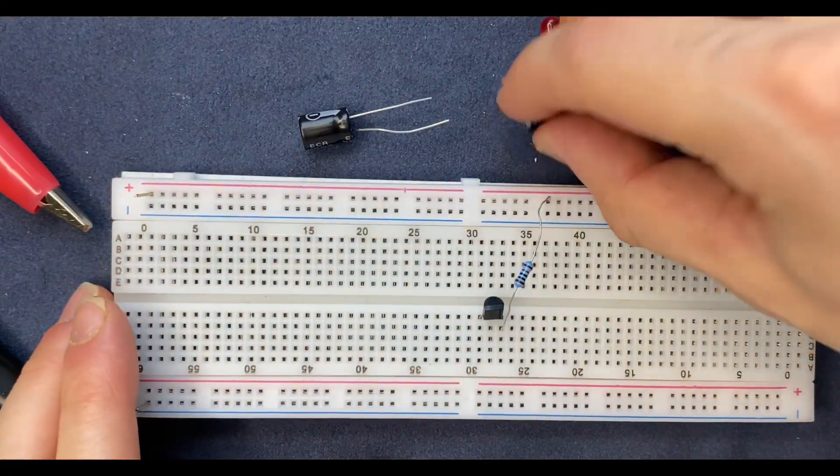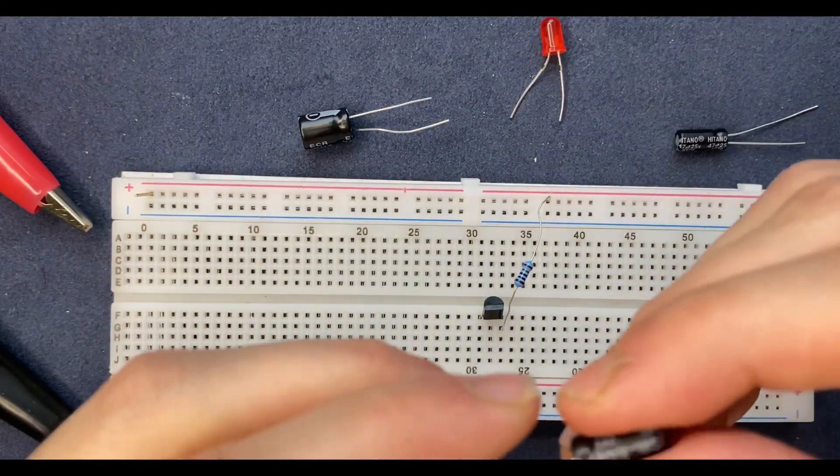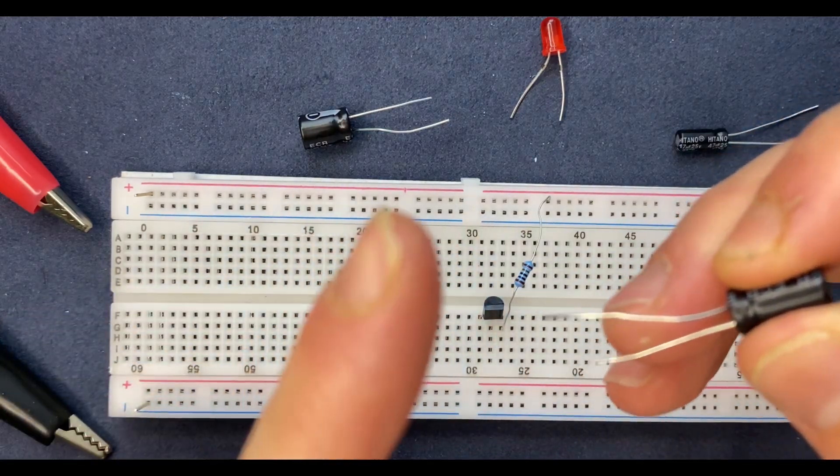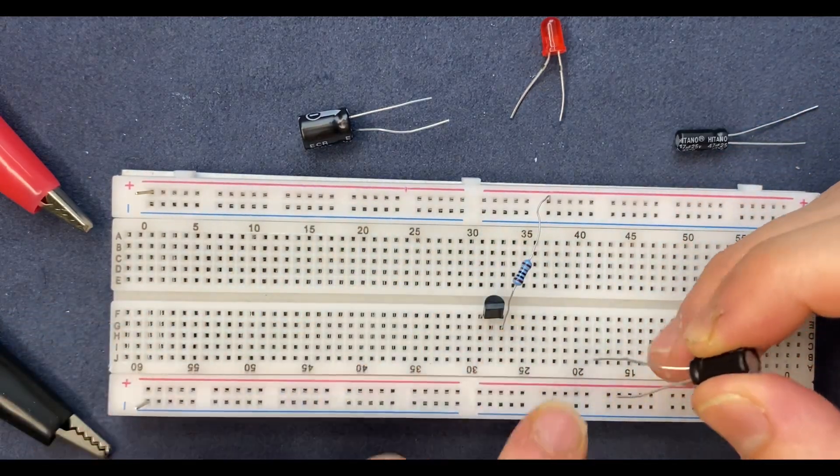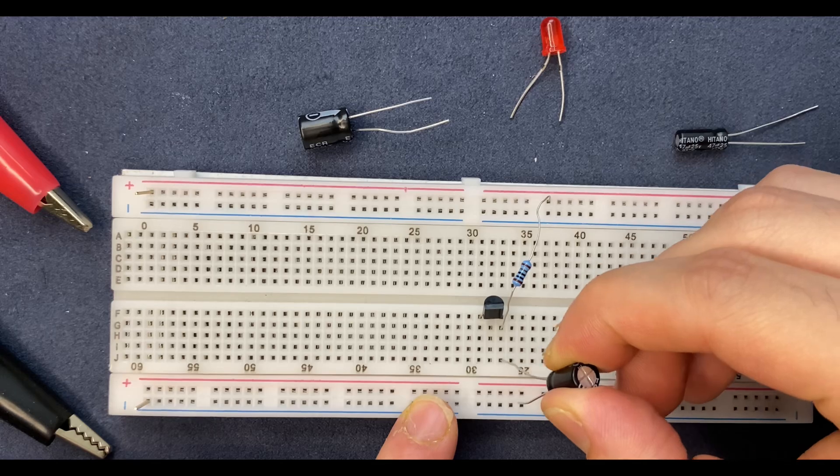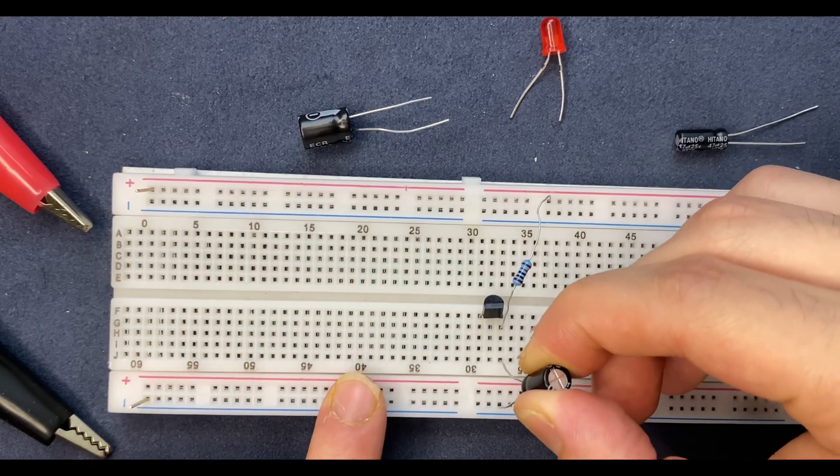So let's go for 100 microfarad for the first try. I will connect my capacitor. The anode will be connected to the emitter of the transistor and the cathode to the negative rail of the breadboard.